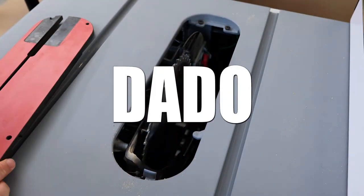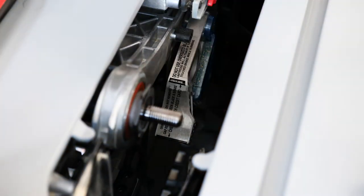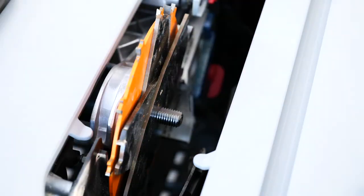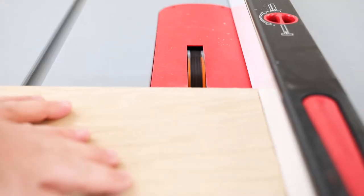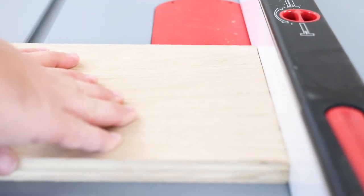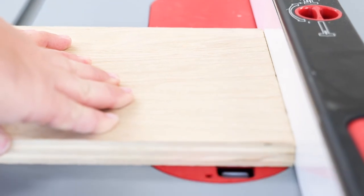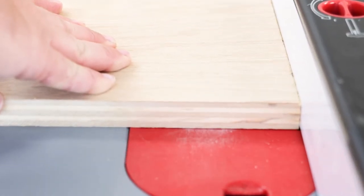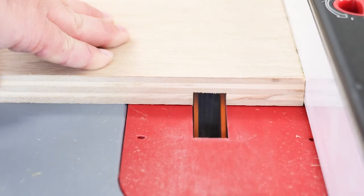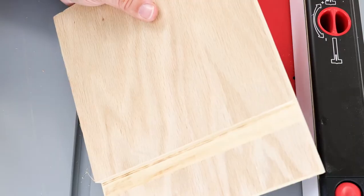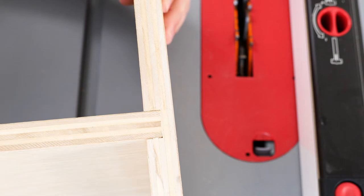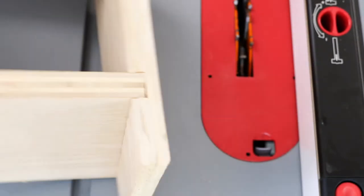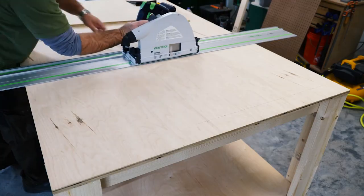Round number six. Coming from a cabinet background, I use dados a lot. Some people never use a dado. And of course, if you have a router, you could use your router to dado, but that's a totally different tool and it doesn't really fit in with this comparison. Dados are great whenever you need to like do interlocking pieces for building a cabinet. It just makes for a pretty strong joint. Especially when you're doing shelves. And yep, track saw just can't do it. In your face, track saw.